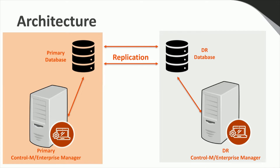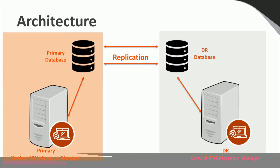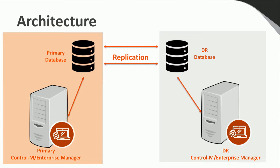This picture illustrates our architecture. On the left side, we have our primary site with our primary Control M Enterprise Manager and its database. On the right side, we have our DR site with a DR Control M Enterprise Manager server and its DR database. We are replicating our primary database to the DR database, so the DR database has the same information and is ready to be used if needed. This replication must be performed using the database's own tools — there is no Control M utility for this. The implementation and maintenance of this replication is the responsibility of your database teams or DBA.